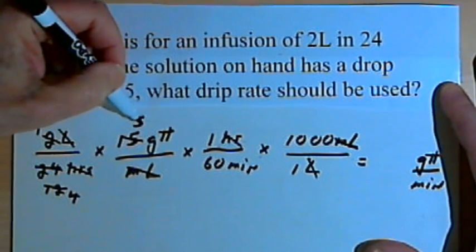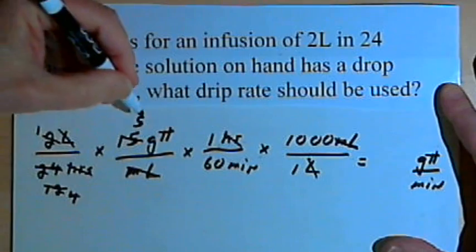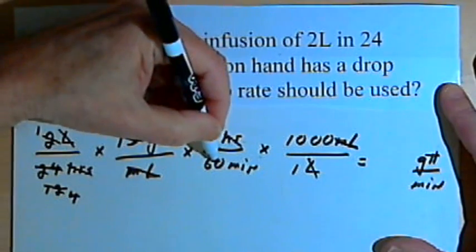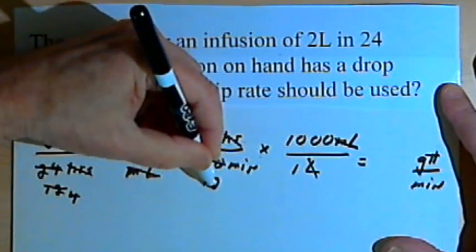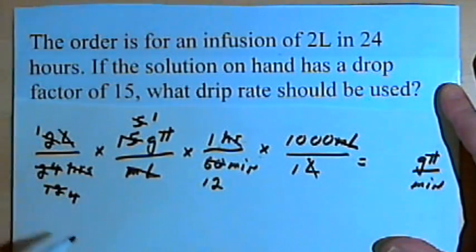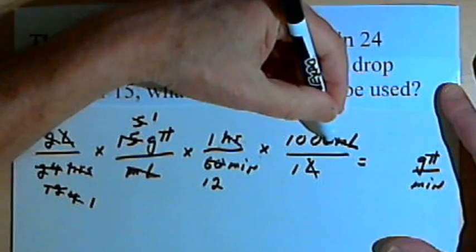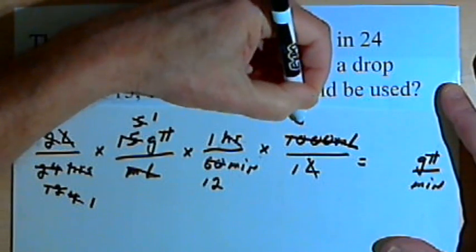I've got 5 and 60, I can divide both by 5. 5 divided by 5 is 1, and 60 divided by 5 is 12. I've got 4 in the denominator and 1,000, I can divide both by 4. 4 divided by 4 is 1, and 1,000 divided by 4 is 250.